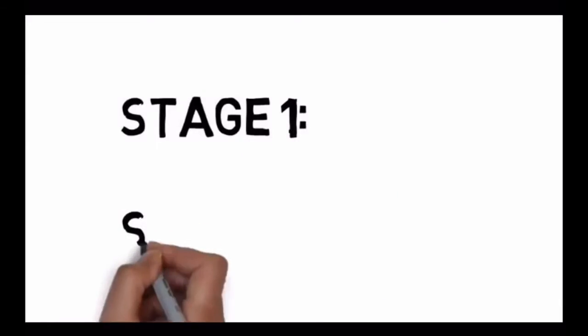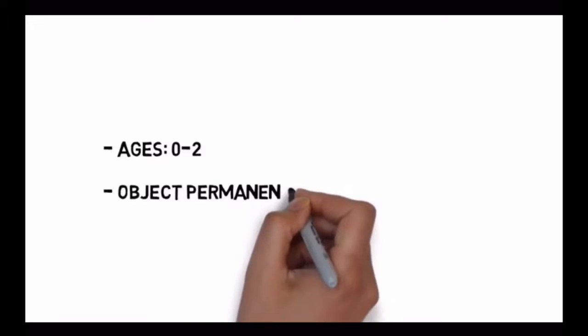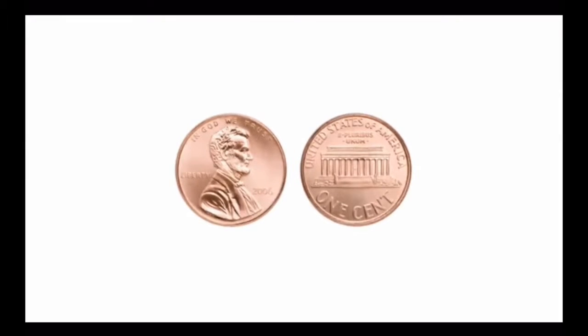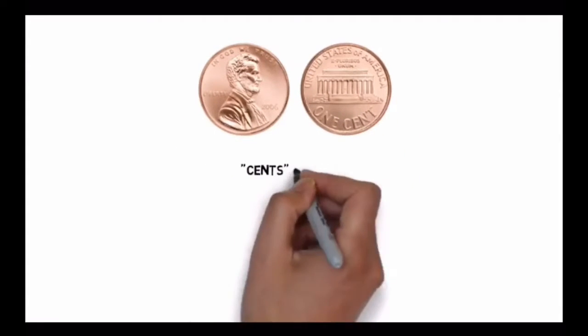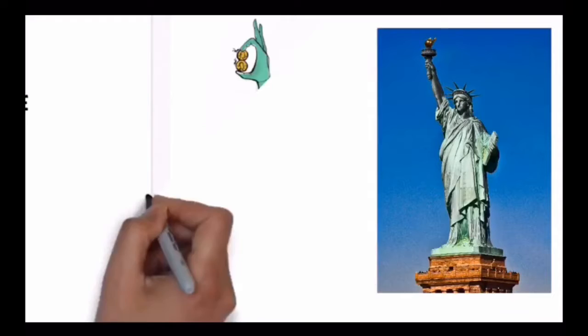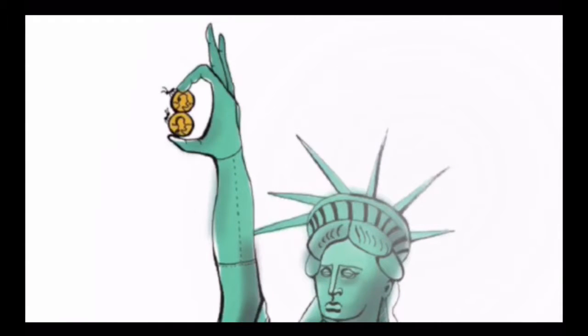Piaget called his first stage the sensory-motor stage. It occurs during the ages of birth to two, and the key challenge for children is to understand that objects exist even when they can't see them - object permanence. We'll use two pennies, or cents, to remind us of sensory motor, and we'll use a pair of ants to remind us of object permanence. At our first location, we'll picture the Statue of Liberty holding two cents instead of a flame, and riding on each cent is a pair of ants. Remember, yes, this is a little ridiculous, but the method works. Spend a moment on this odd image, and then move on. Two cents, and a pair of ants.